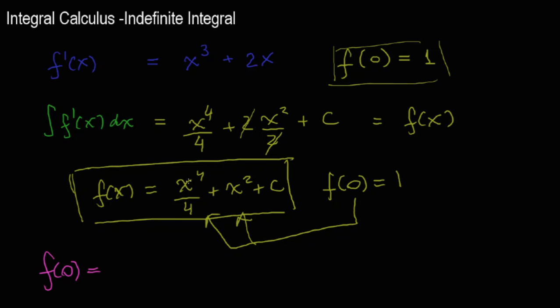f of 0, if x is 0 here, that's 0. 0 to the power of 4 over 4, that's 0, plus x squared, which is 0, 0 squared, plus c, and that should be 1. You can see here that those first terms, they will vanish, and what you find at the end is that c is equal to 1.